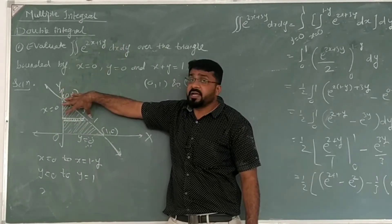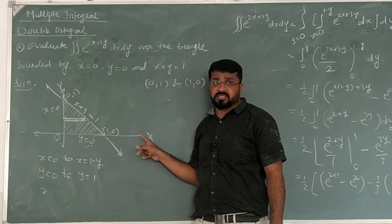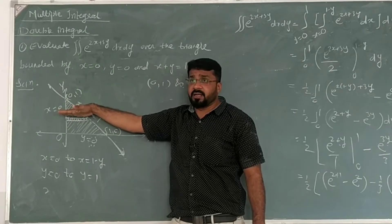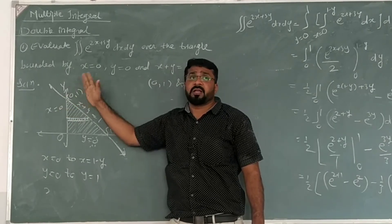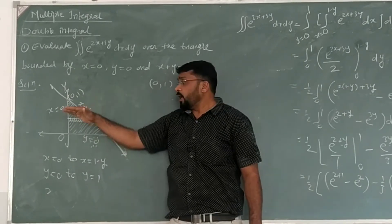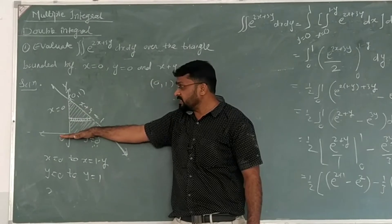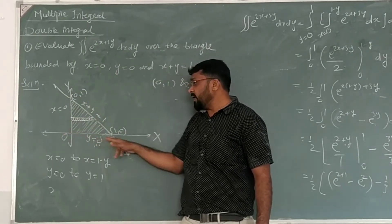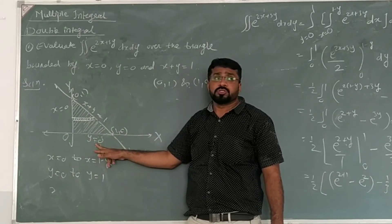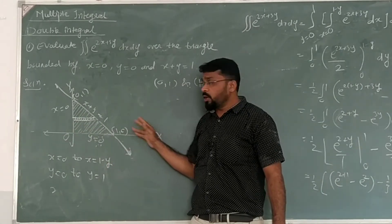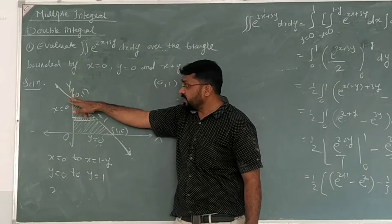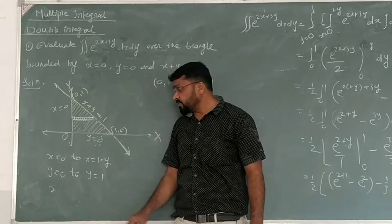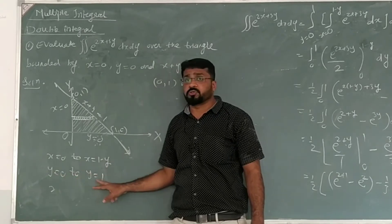The strip is parallel to the x-axis — we always take it parallel to the x-axis (or parallel to the y-axis for vertical strips). When we slide it, we get the y limits. Y goes from 0, which is the x-axis, up to the point (0,1) on the y-axis. So y goes from 0 to 1.